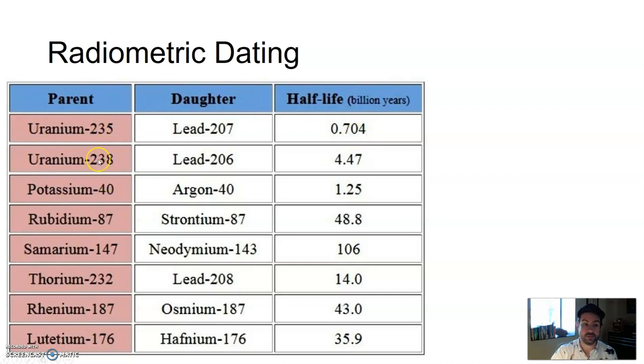There's a couple of different isotopes of uranium. We can use potassium, rubidium, samarium, thorium, rhenium, lutetium, and then they decay into these different things. Depending on what we're dating and how accurate we need to be, different processes, we can use different radiometric isotopes, radioactive isotopes, different parents.